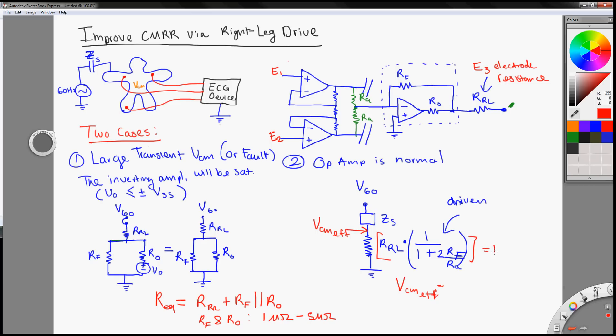I'll call it R effective. R, effective, R, effective, you go to R, effective, plus Z, S, times, V, 60. So,